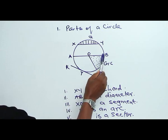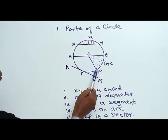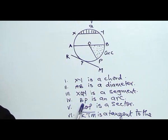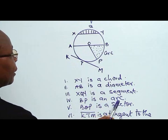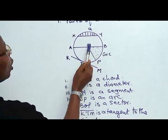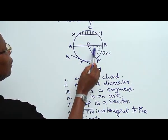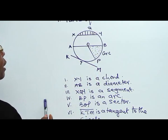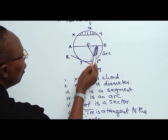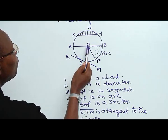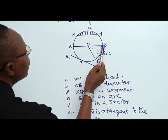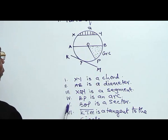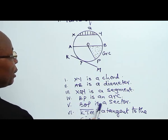Then we also have BP. From B to P, it is called an arc. So BP is an arc. Then we also have BOP, and this is a sector of a circle. The sector of a circle is bounded by the radius here and the radius here and then the arc. BOP is a sector.